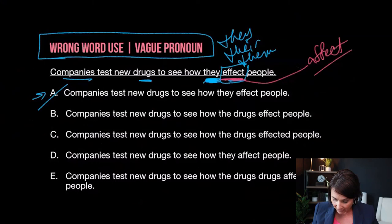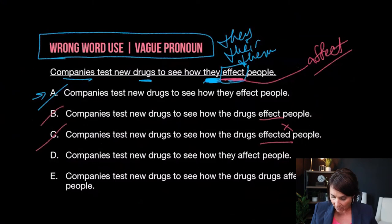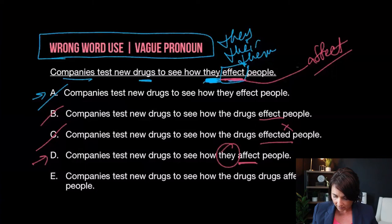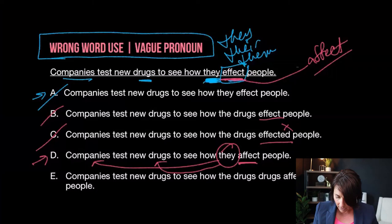So A is definitely out. And anything with "effected" — never, no. "Effected" with an E: we don't put "-eds" on nouns. B and C are out just by knowing affect versus effect. Now I have D: "Companies test new drugs to see how they affect people." You might be tempted to grab D because I've got the right form of "affect." However, I've got that vague pronoun "they" — it goes with companies but also with new drugs. So we need: "companies test new drugs to see how the drugs affect people." E is the best answer choice.